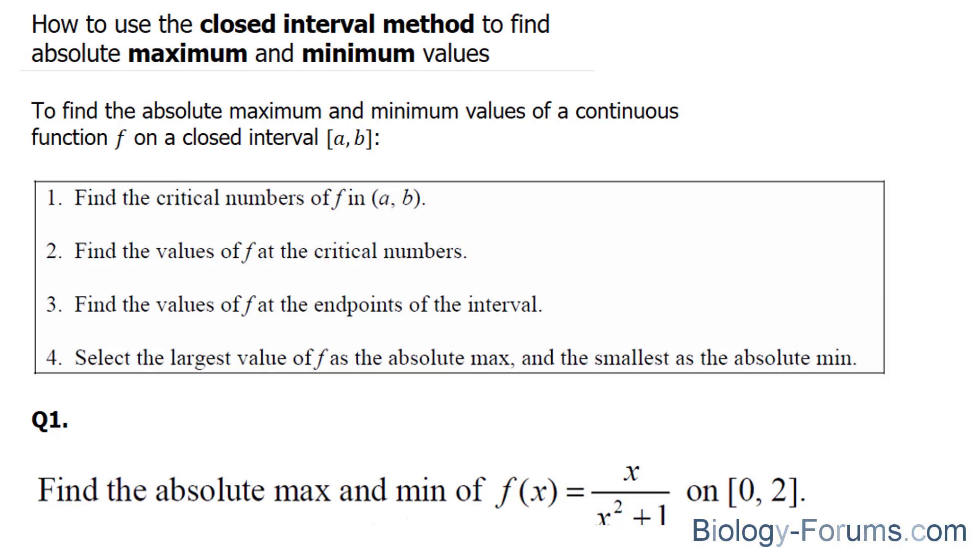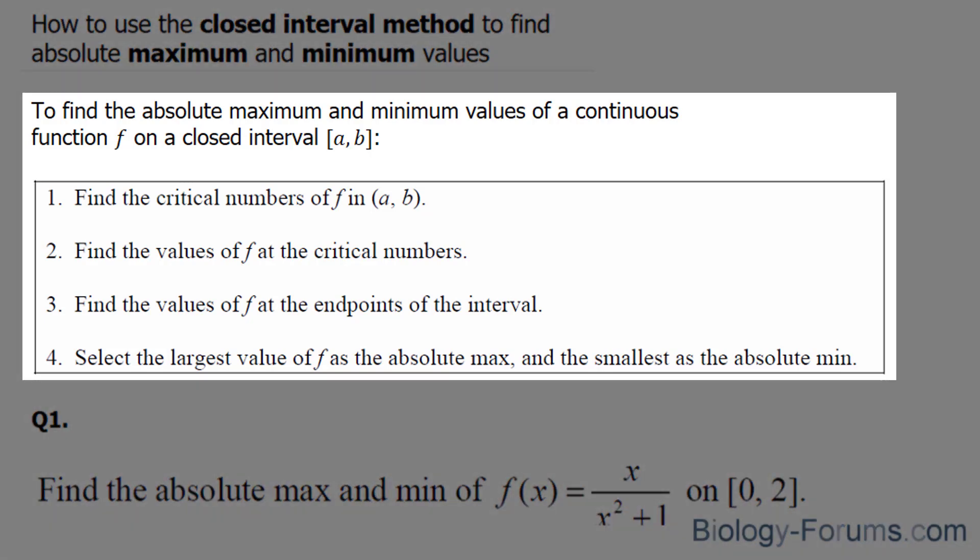In this demonstration, I'll show you an example on how you can use the closed interval method to find the absolute maximum and minimum values. To find the absolute maximum and minimum values of a continuous function f on a closed interval between a and b, you need to follow the following steps.